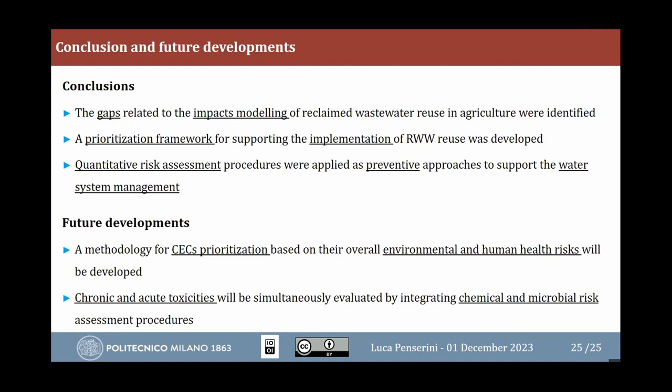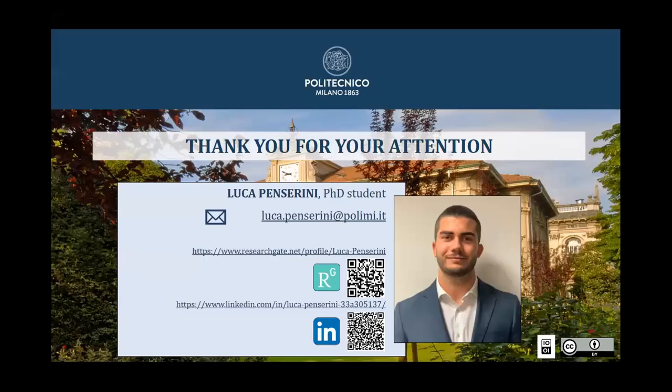To wrap up: the PhD covers five tasks. The first three are completed — identifying gaps in literature, developing a prioritization framework, and applying QCRA as a preventive approach to support water management. The next two steps will combine environmental and human health risk, and then chemical and microbial risk. Thank you, and I'm happy to take any questions.